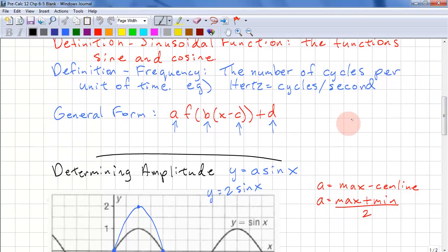The general form of any transform is a times f of b times (x minus c) plus d. Previously we've used h and k for these values.